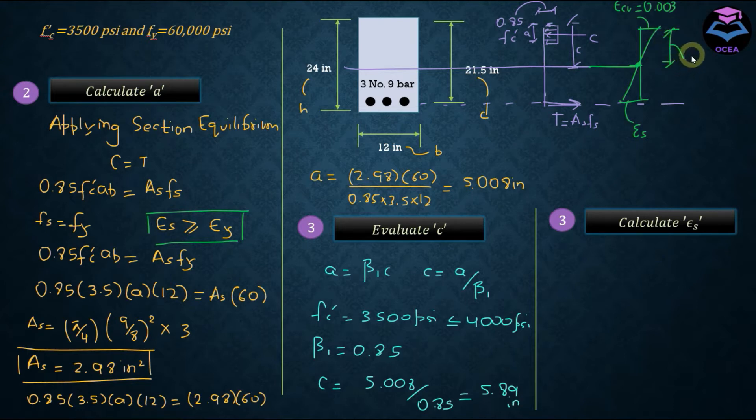That is the depth of neutral axis and is equal to 5.89 inches. And this distance from top to the level where steel bars are placed, this is equal to D which is the effective depth. So if we use the property of similar triangles for these two triangles, comparing the perpendicular upon base of these two triangles, we can calculate epsilon s from here.